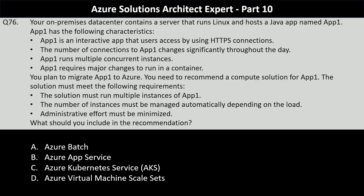Your on-premise data center contains a server that runs Linux and hosts a Java app named App1. App1 is an interactive app that users access via HTTPS connections. The number of connections changes significantly throughout the day. App1 runs multiple concurrent instances but requires major changes to run in a container. You plan to migrate App1 to Azure and need to recommend a compute solution that runs multiple instances, manages instance count automatically based on load, and minimizes administrative effort.